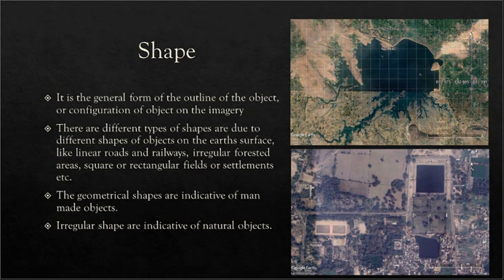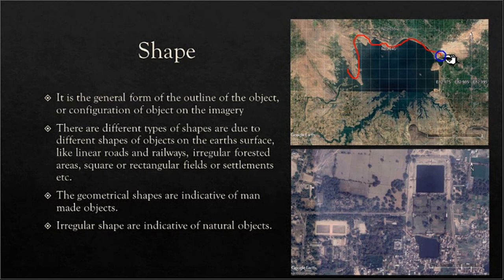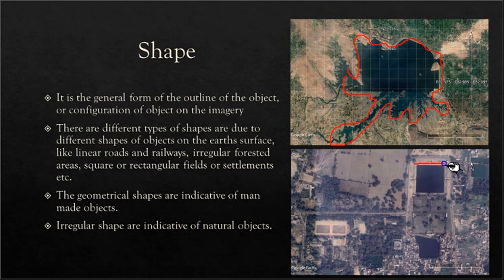Coming to the next element, it is shape. Shape is basically the general form of the outline of the object or the configuration of object on the imagery. You can see the same water body shown previously — here is the outline of the water body and it represents a random shape. In another imagery, there is a water body having a distinct shape — it is a square. The general form that an object has in the imagery is called its shape.